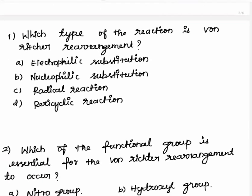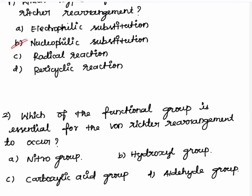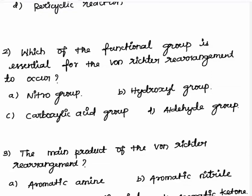How to answer questions for Von Richter rearrangement: Which type of reaction is Von Richter rearrangement? This is aromatic nucleophilic substitution. Is Meisenheimer rearrangement possible? Yes. Second question: which functional group is essential for the Von Richter rearrangement? The nitro group is compulsory.